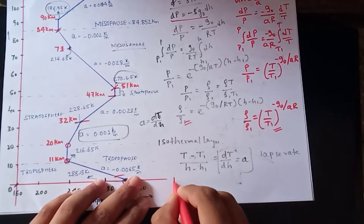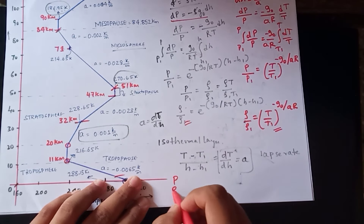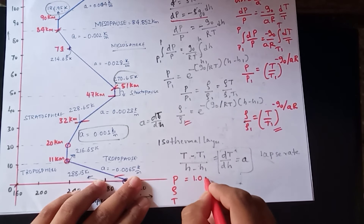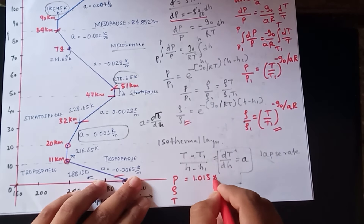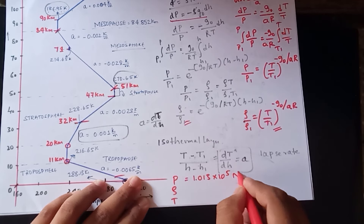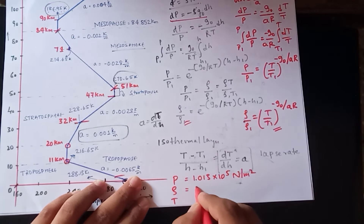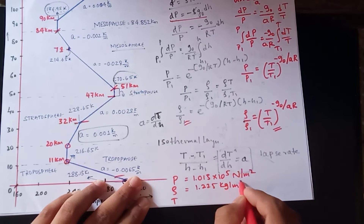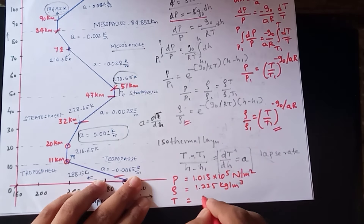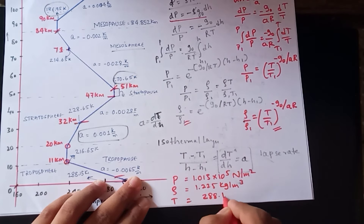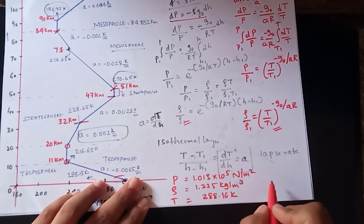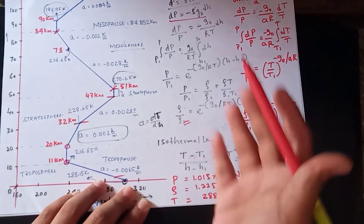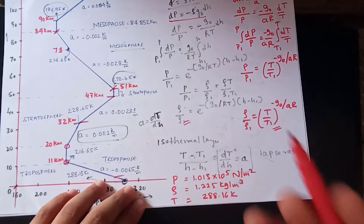We know the standard sea-level values: pressure p = 1.013 × 10⁵ N/m², density ρ = 1.225 kg/m³, and temperature T = 288.16 K. Using these sea-level values, we can find variations in pressure, density, and temperature for any given altitude region.